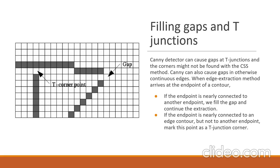This is Nagasai. After the Canny edge detection, which is the first stage of the CSS corner detection method, here we can see the edge extraction image. The next step is filling the gaps and T-junction identification. After edge extraction, the Canny detector can cause gaps in otherwise continuous edges and also at T-junctions, and corners might not be found with the CSS method. When the edge extraction method arrives at the endpoint of a contour, it performs two checks: if the endpoint is nearly connected to another endpoint, it fills the gap and treats it as a continuous edge; and if the endpoint is nearly connected to an edge contour but not to another endpoint, it is marked as a T-junction corner.